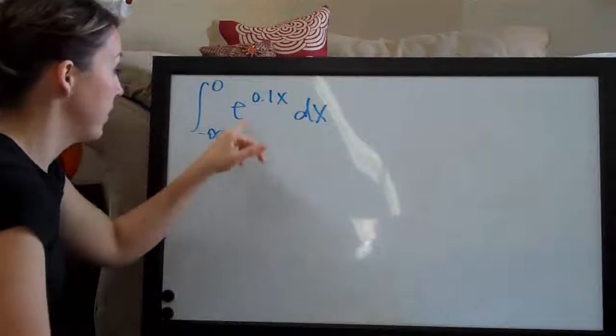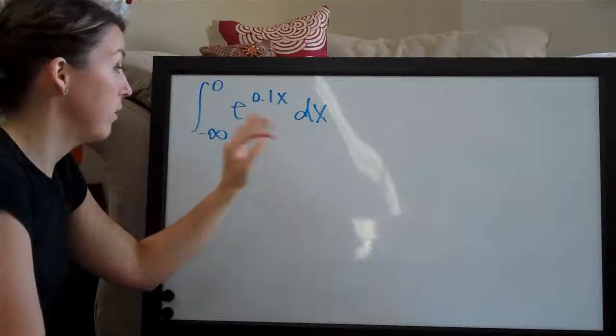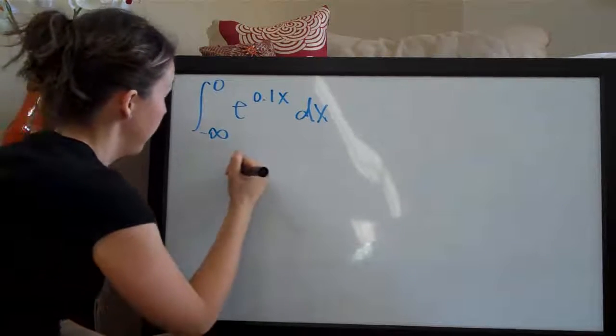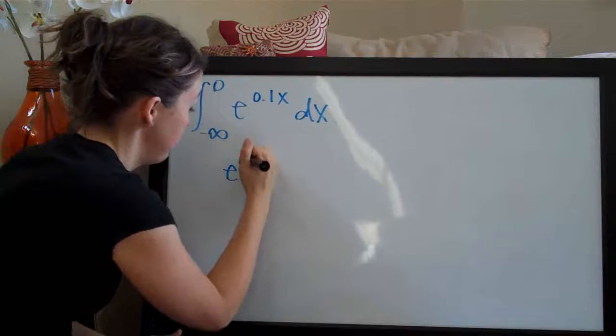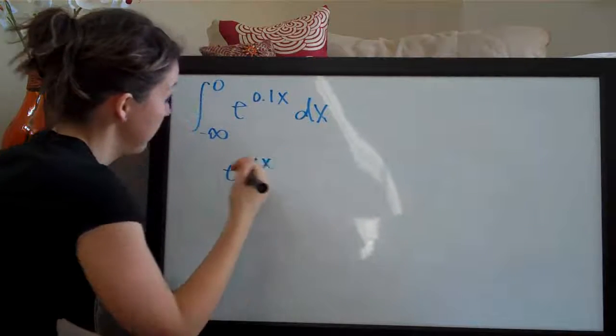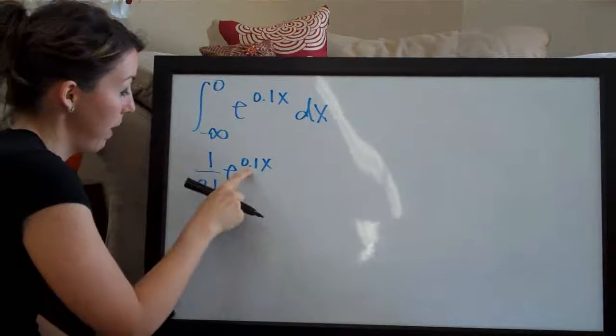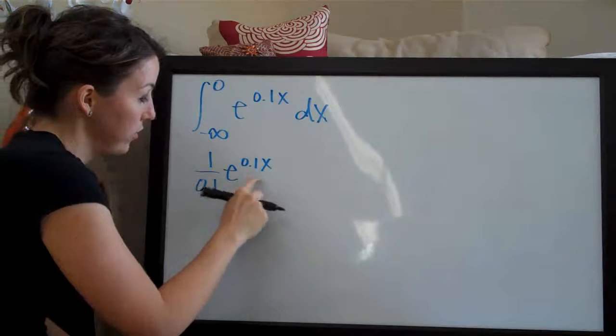So the first thing we're going to do is take this integral. It's simple enough that we can handle it without making any changes or substitutions or anything. It ends up being e to the 0.1x. That stays the same. And you divide the coefficient by the coefficient on the exponent.